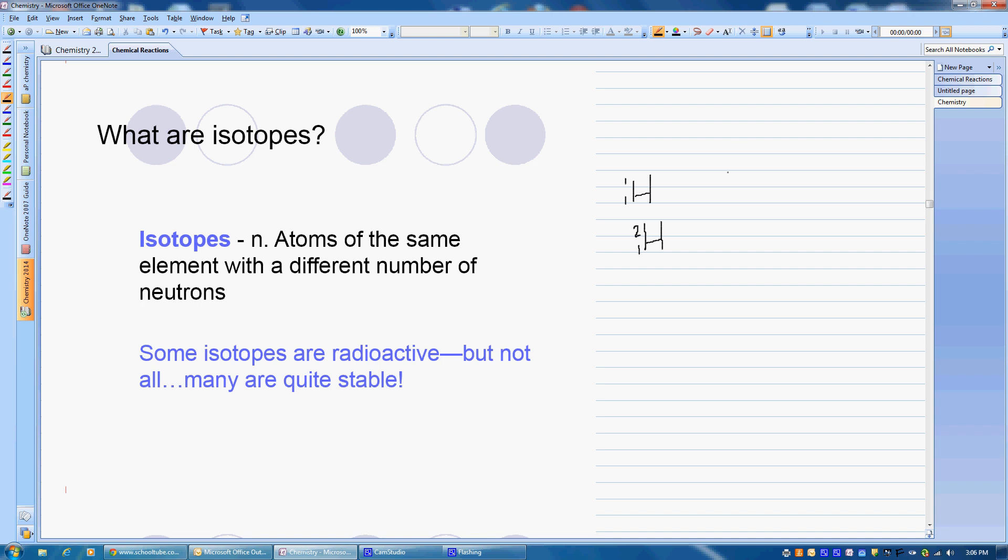So if we go back and review, mass is equal to protons plus neutrons. Here, if our mass is 1, and we know with hydrogen that the protons have to be 1, that means that we have 0 neutrons.